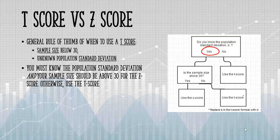If you do know it, then the question becomes, is your sample size above 30? If it is, you can use the Z-score. If not, use the T-score.